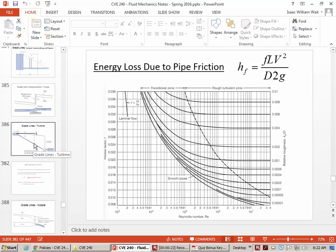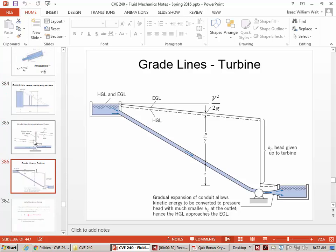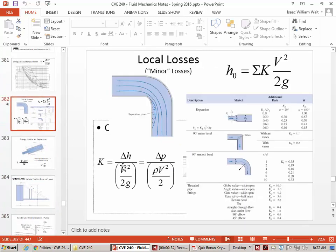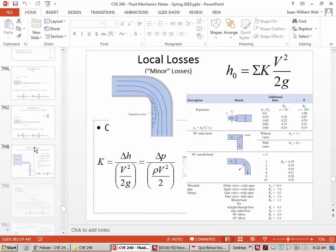We've also done some material relating to how to draw grade lines, and that's also important. And then there was a table that we looked at that has k values for a lot of different fittings. We're going to do an example in class today where you get some experience working with k values and friction losses in the same problem.